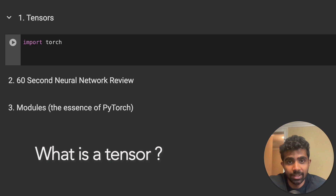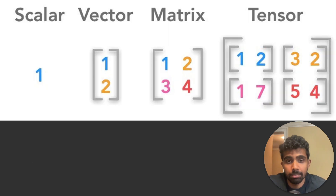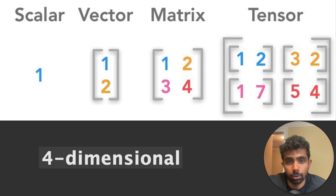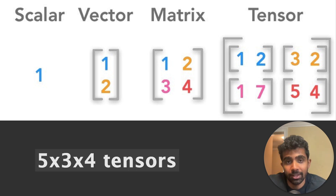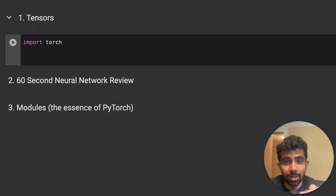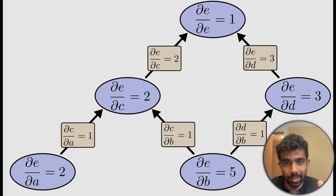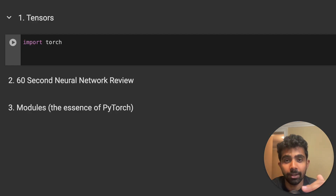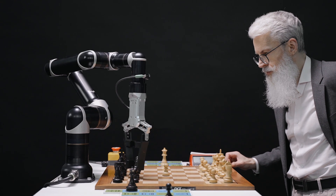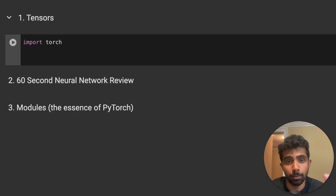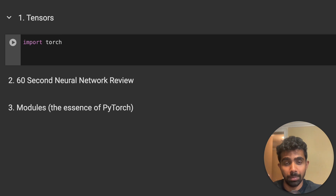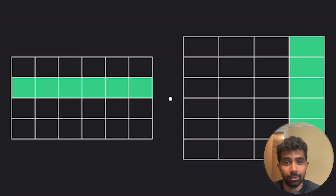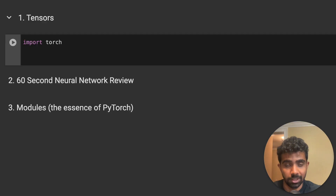So what is a tensor? This is the fundamental data type of PyTorch — it's really just an array or a matrix, except they can be multi-dimensional: three-dimensional, four-dimensional, five-dimensional. We can have five-by-three-by-four tensors. They carry important attributes under the hood used to train machine learning models, effectively taking care of all the math for us. PyTorch also comes with efficient implementations of matrix multiplication and many other math operations.